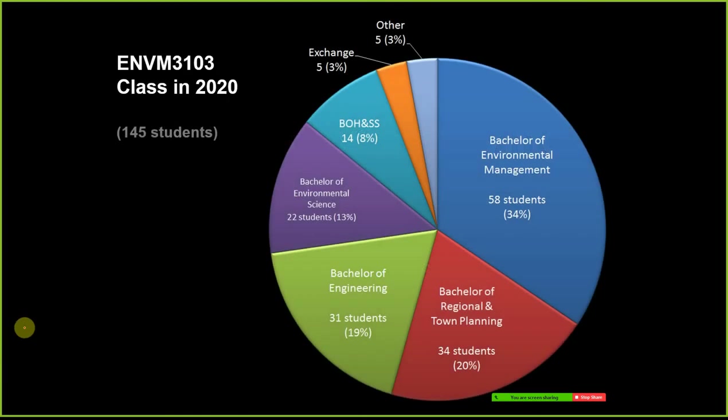In thinking about this I'm thinking particularly about who is in this course. For our undergraduate course in EVM3103: about 30 percent Bachelor of Environmental Management students, 20 percent Bachelor of Regional Town Planning, 20 percent engineering students, about 13 percent environmental science students, eight percent occupational health and safety, and about six to ten percent other courses, exchange and other degrees. I'm particularly thinking about the environmental management, town planning, engineering and environmental science students and the careers you're going to have.